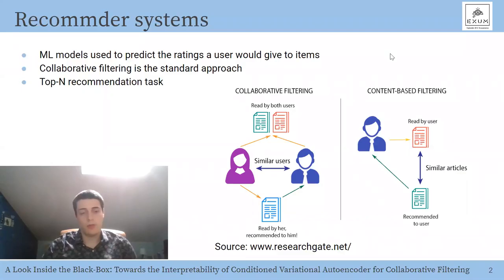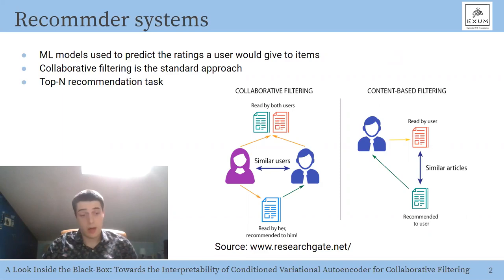I want to begin this presentation with a little background about recommendation systems. Recommendation systems are models used to predict the ratings a user will give to items on a given platform, for example Netflix or Amazon. They are widely used in commercial applications such as music or video streaming and e-commerce sites, because items in these applications are really huge in numbers, so users need help in their decision process.